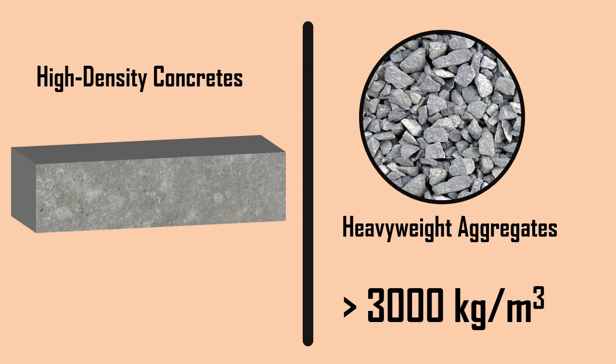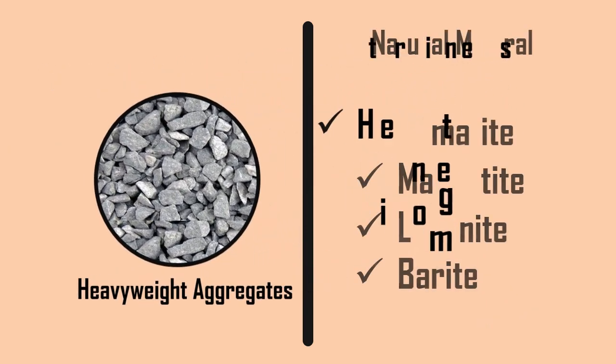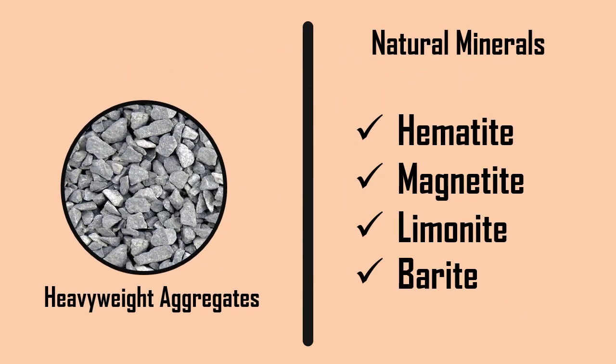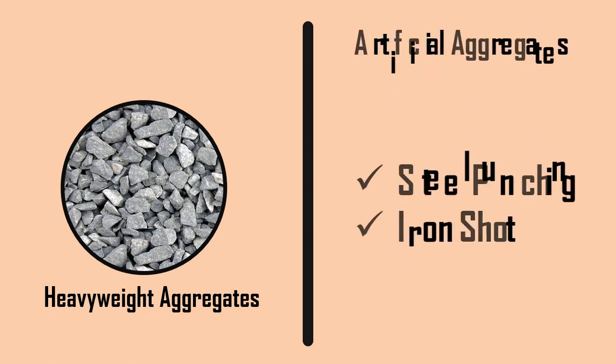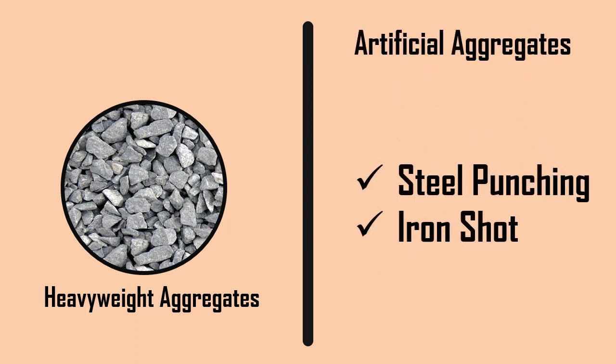Some of the natural minerals used as heavyweight aggregates are hematite, magnetite, limonite, and barite. Some of the artificial aggregates include materials like steel punching and iron shot.